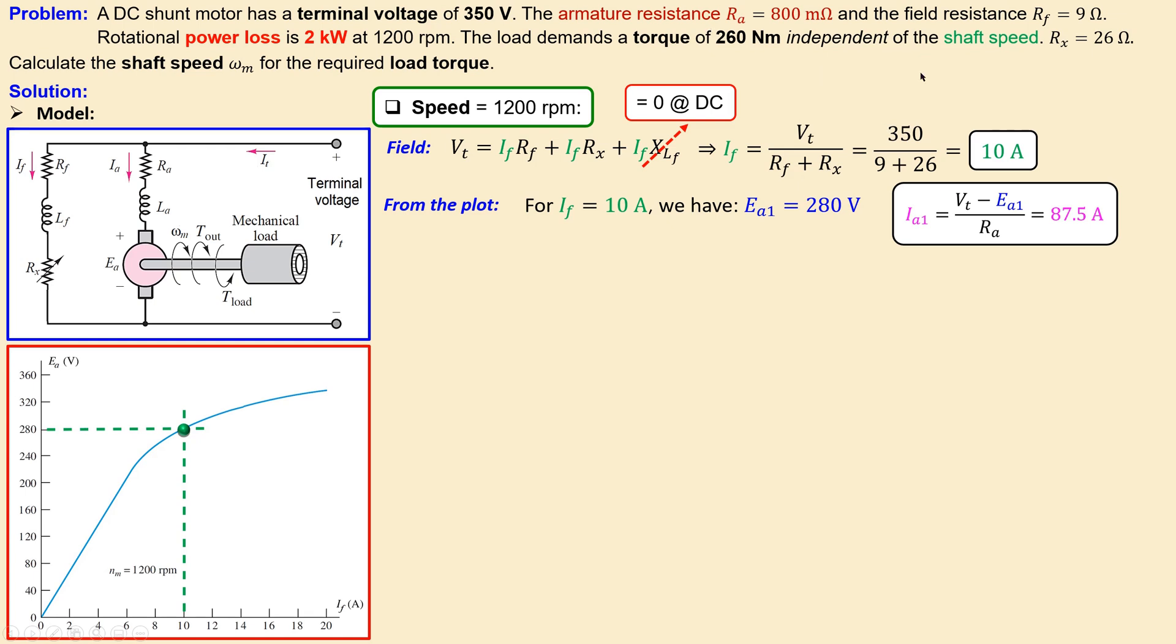If you now substitute the values, 0.8 here, 350 and also 280 volts, you will get this current. Why do I show this current? Because this current is only for this specific case and not for the actual case for our load torque.